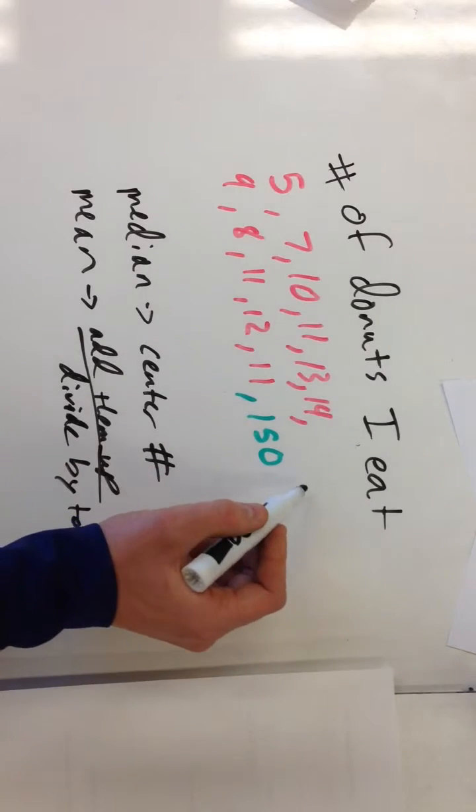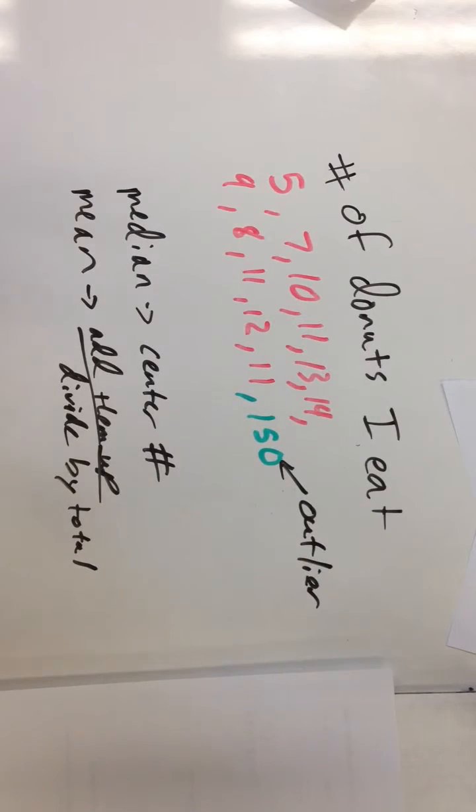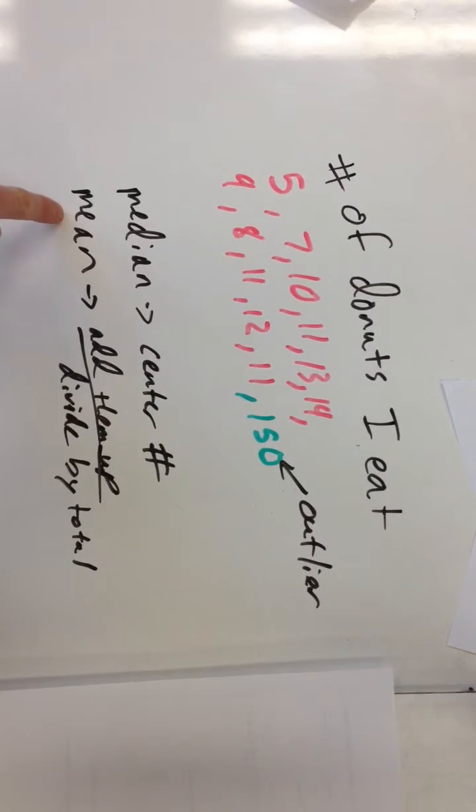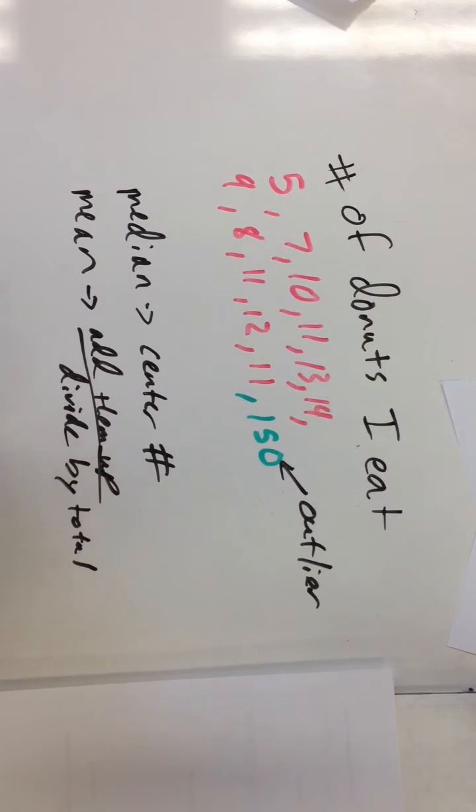So what this thing right here is called, it's called an outlier. And I'm 95% sure that's how you spell outlier. And the mean is very affected by outliers because it's treated like all the other numbers. It gets added up and divided.